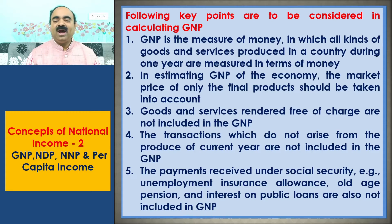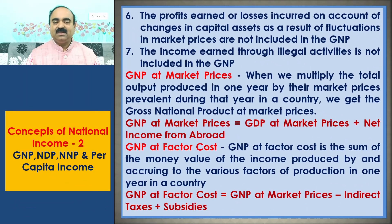The transactions which do not arise from the produce of current year are not included in the GNP. The payments received under social security, for example, unemployment insurance allowance, old age pension, and interest on public loans are also not included in GNP. The profits or losses incurred on account of changes in capital assets as a result of fluctuations in market prices are not included in the GNP.